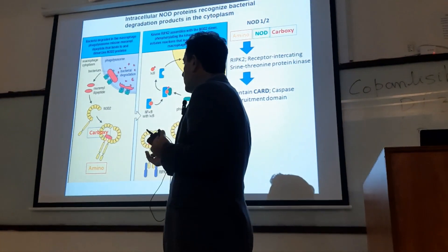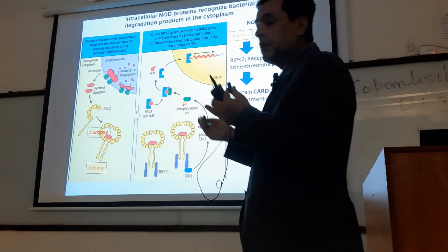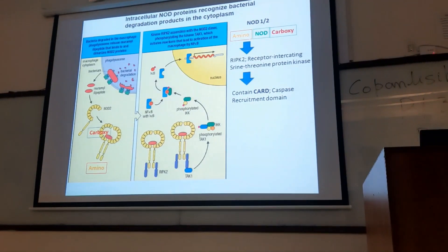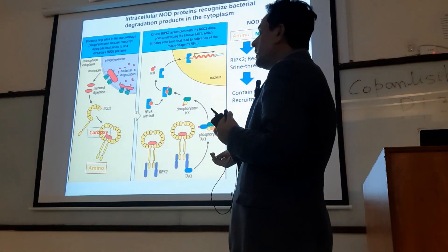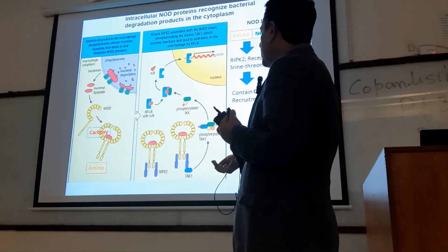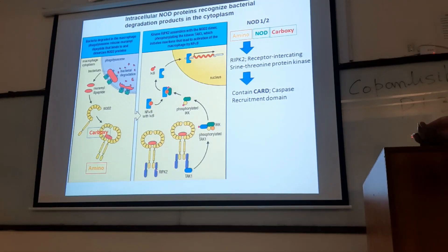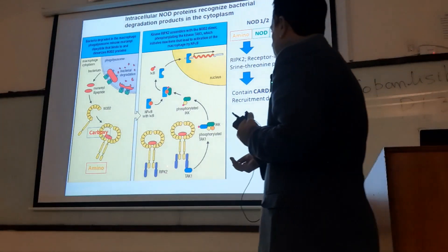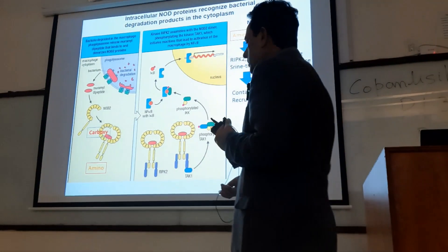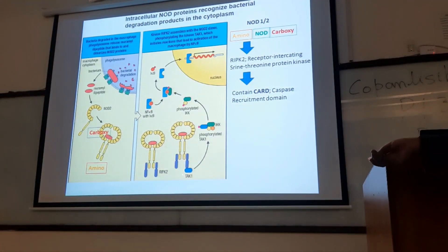When the NOD-like receptor binds to the antigen, dimerization of receptors takes place — receptors always make dimers. This activates RIPK2, and the CARD domain of RIPK2 binds with the CARD domains of the NOD-like receptors. Activation of this kinase RIPK2 then phosphorylates another kinase known as TAK1.